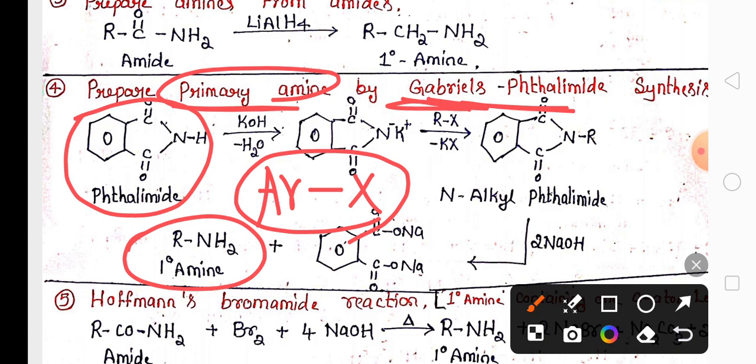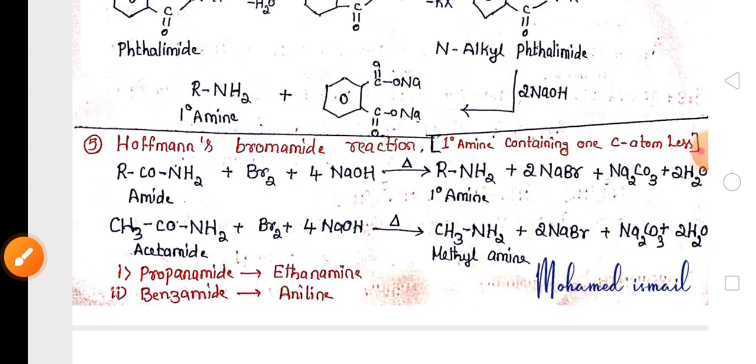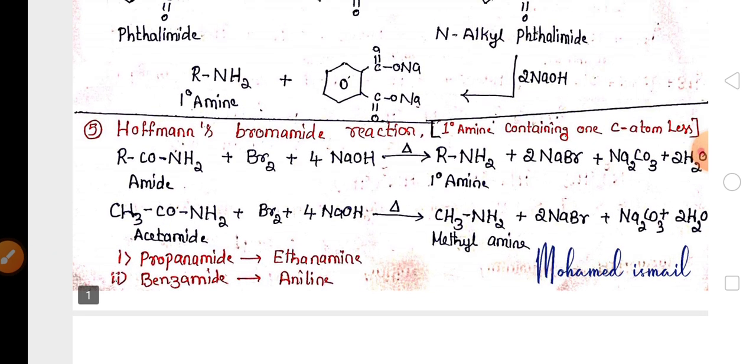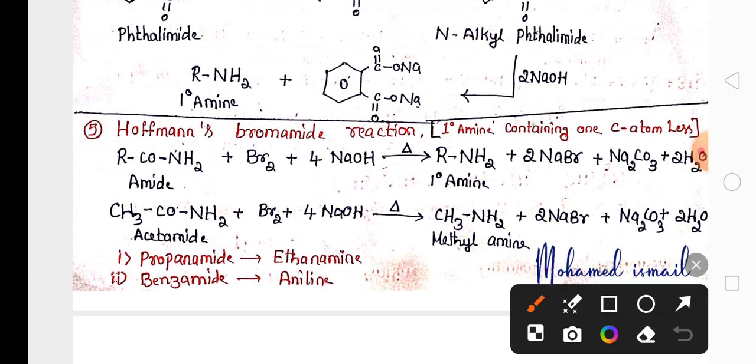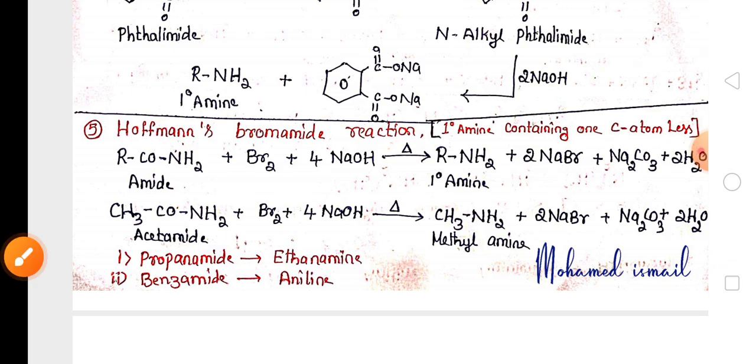Another highly important reaction of this chapter is Hofmann bromamide degradation reaction. In this reaction, amide compared to reactant amide and product amine, there is one carbon atom less. For example, if you take two carbon acetamide you will get one carbon amine, methylamine. If you take three carbon amide you will get ethylamine. If you take benzamide you will get aniline.